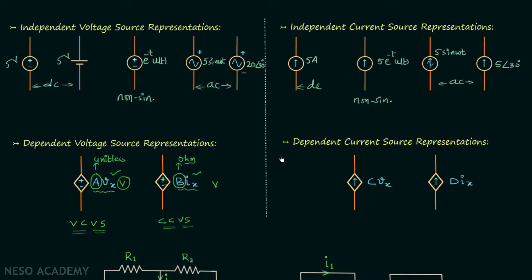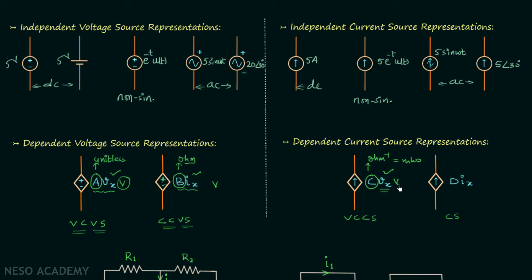For dependent current sources, the diamond structure contains an arrow indicating the direction of current. The first type is a Voltage Controlled Current Source (VCCS), where the current depends on voltage Vx. Since A·Vx must have units of amperes and Vx has units of volts, the constant C must have units of ohm⁻¹, also called mho.